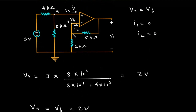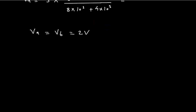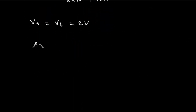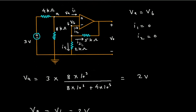Since VA is equal to VB, we have VA = VB = 2V. Now at node B, we can apply KCL. Let's say the currents are I3, I4, and I2, and all the currents are leaving the node. So: 0 = I2 + I3 + I4.